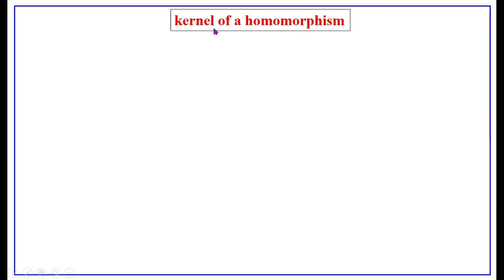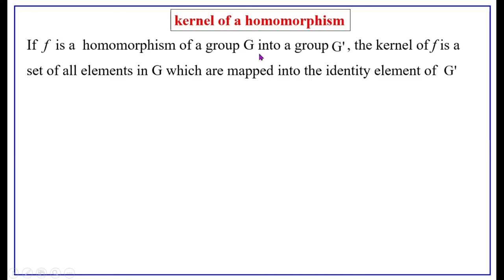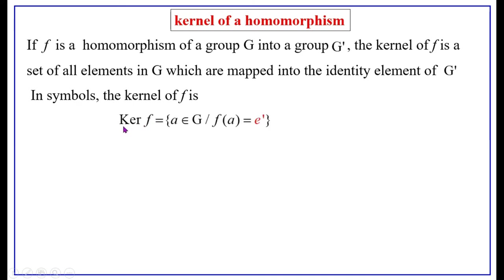How do we define the kernel of a homomorphism? The meaning of kernel is the central or most important part of something. Here, kernel of a homomorphism means the most important part of the homomorphism. If F is a homomorphism of a group G into a group G', then the kernel of F is the set of all elements in G which are mapped into the identity element of G'. In symbol, the kernel of F, written as ker(F), equals the set of all A belonging to G such that F(A) equals E'.